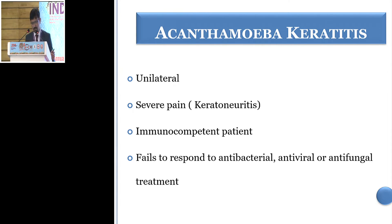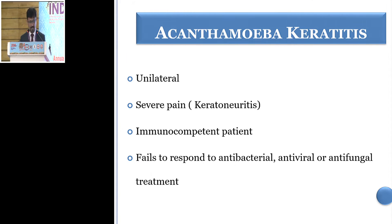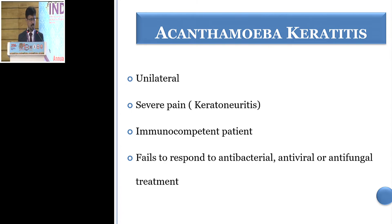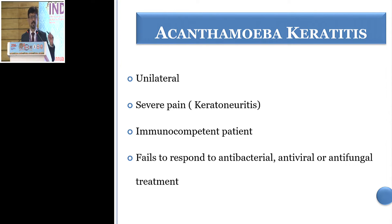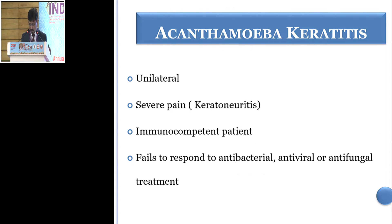Mostly it is unilateral. It classically presents with severe pain, basically because of keratoneuritis — except in immunocompromised patients like HIV patients or advanced diabetic patients, who may have a silent acanthamoeba keratitis that is not very painful. Most of the time, in any corneal ulcer, when the patient comes to us, we may not get the pathognomonic sign, and we start treating with antibacterials. When nothing works, we then start thinking about acanthamoeba — this is how it is often diagnosed.